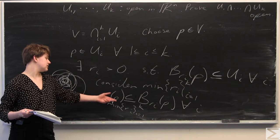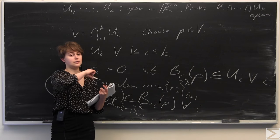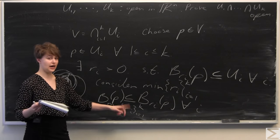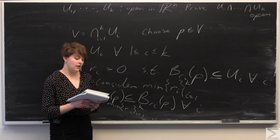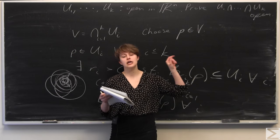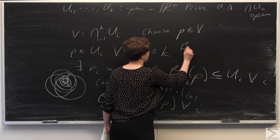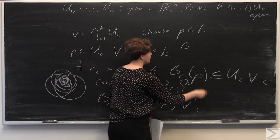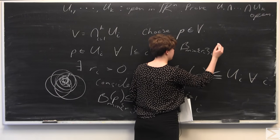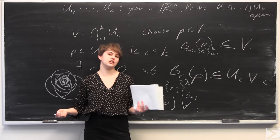The smallest-radius ball centered around p is going to be completely contained within all of the other balls of radius ri centered around p. Just because we chose the smallest one, by definition it's going to be inside all of the bigger ones, for all i. And we know that all of these balls of radius ri are contained in V, because V is the intersection of all of the ui. So we know that therefore the ball of the minimum radius around p is completely contained within V, the intersection of all of the open sets.